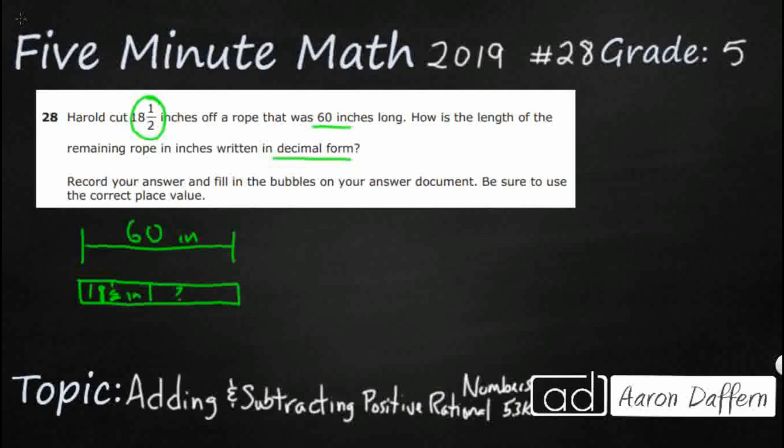So looking at that, it's pretty clear. We're going to do a little bit of subtraction here. So 60 minus 18.5. Now that is going to be a little bit tricky because we have a little bit of mixed numbers.